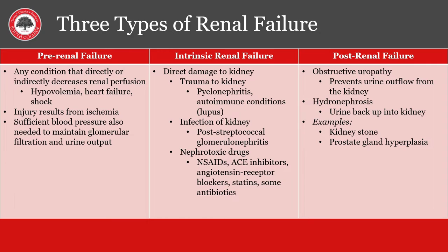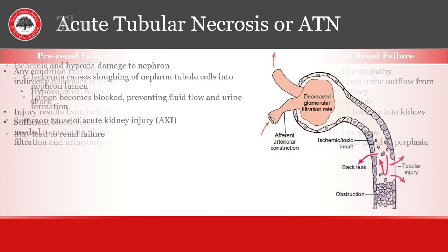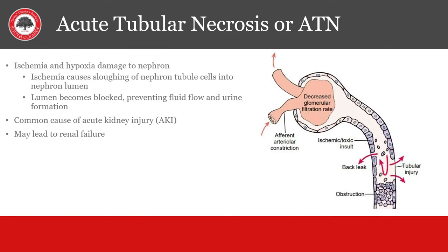Intrinsic renal failure can be from trauma, pyelonephritis, autoimmune diseases like lupus, group A beta-hemolytic strep, or due to nephrotoxic agents. Post-renal failure is obstructive renal failure. This can be due to kidney stones, enlarged prostate, bladder cancer, or bladder stones. You will see hydronephrosis of the kidney. Acute tubular necrosis is the most common cause of acute kidney injury, which is the initiation of acute renal failure potentially. If enough of the tubules are injured, then this will lead to acute renal failure and would be intrinsic renal failure.